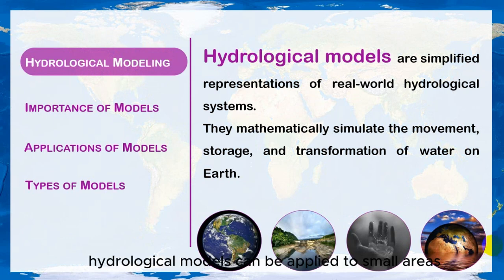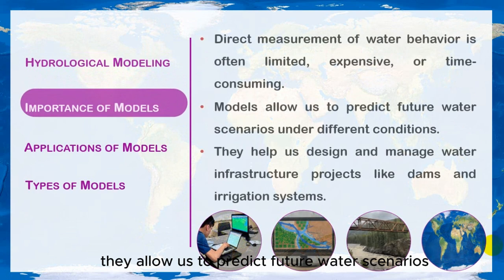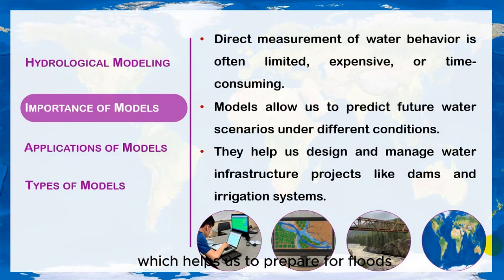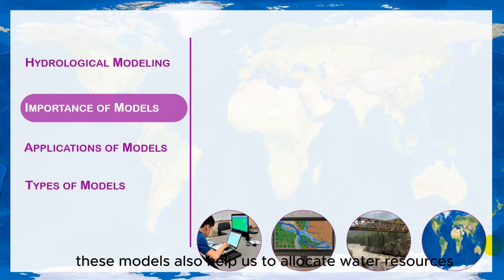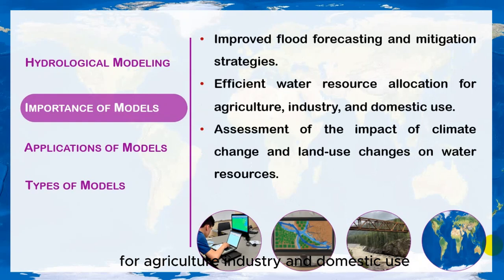Hydrological models can be applied to small areas, such as a tiny stream, to a massive river basin. They allow us to predict future water scenarios under different climate and land use conditions, which helps us to prepare for floods with better forecasting and mitigation strategies. These models also help us to allocate water resources for agriculture, industry, and domestic use.